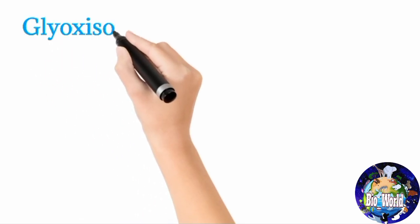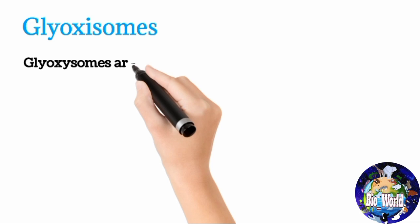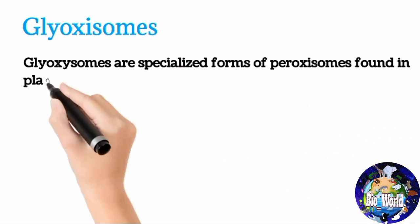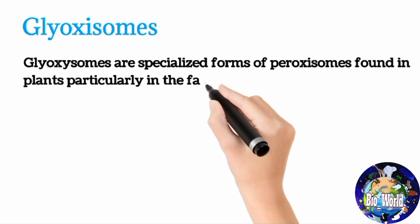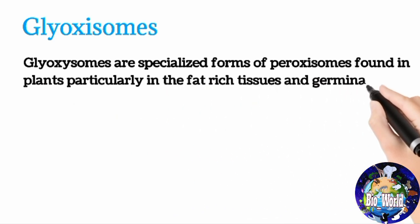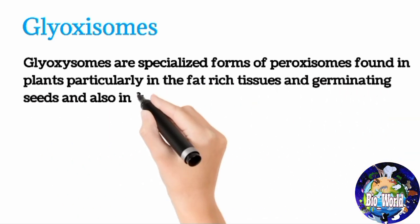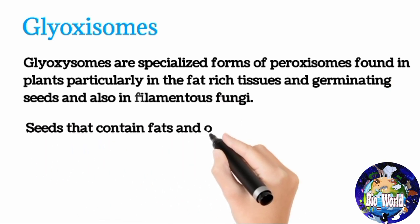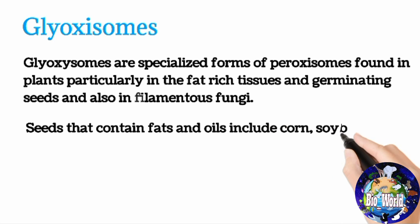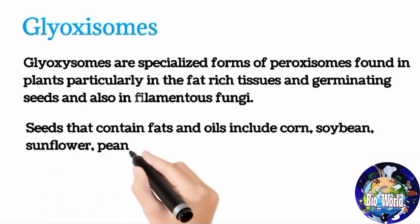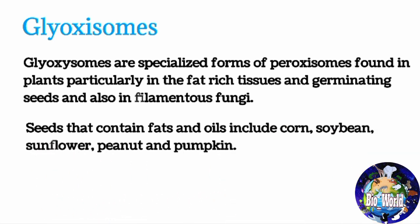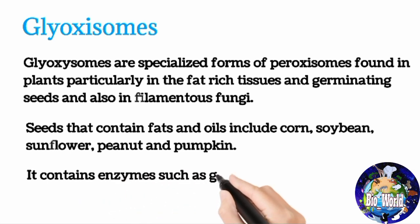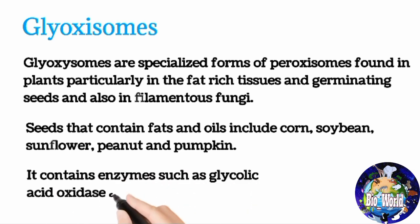The second cellular organelle is the glyoxysome. Glyoxysomes are specialized forms of peroxisomes found in plants, particularly in fat-rich tissues and germinating seeds, and also in filamentous fungi. Seeds that contain fats and oils include corn, soybean, sunflower, peanut, and pumpkin. Glyoxysomes contain enzymes such as glycolic acid oxidase and catalase.